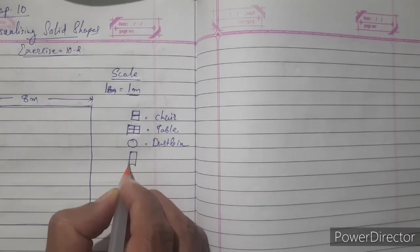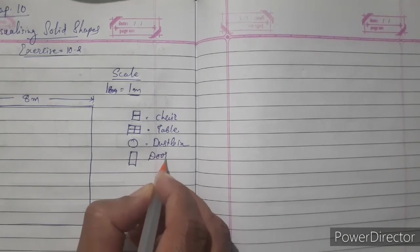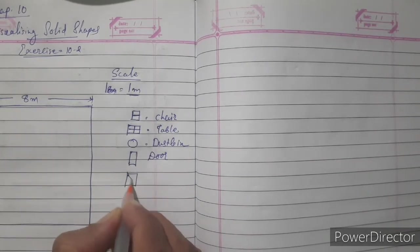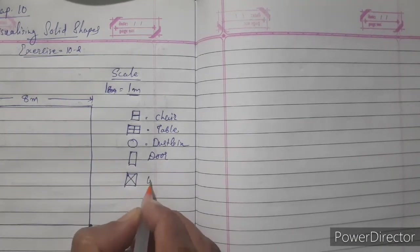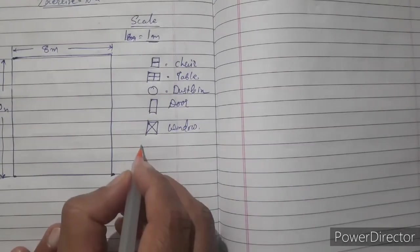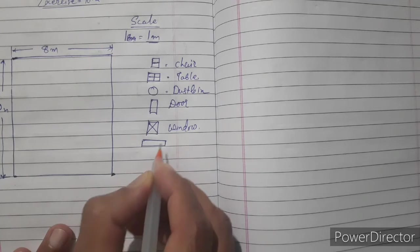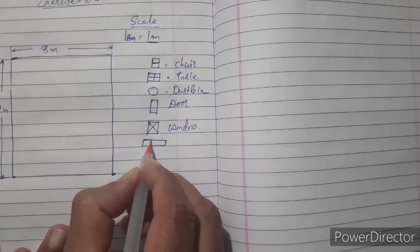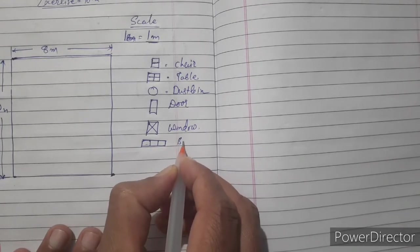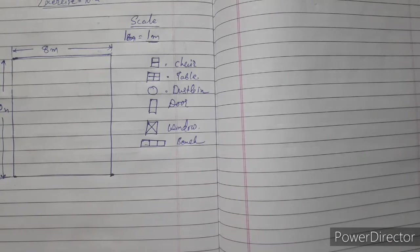Then this type of rectangle, vertical rectangle for door. And square with cross, that is for window. And horizontal rectangle with three parts, that is for benches.